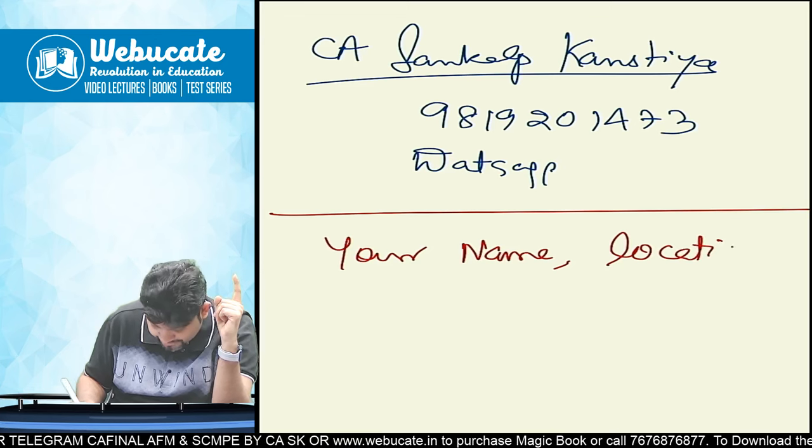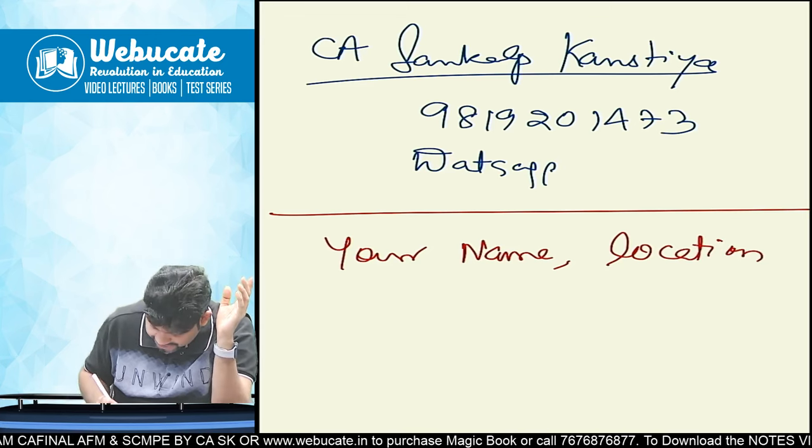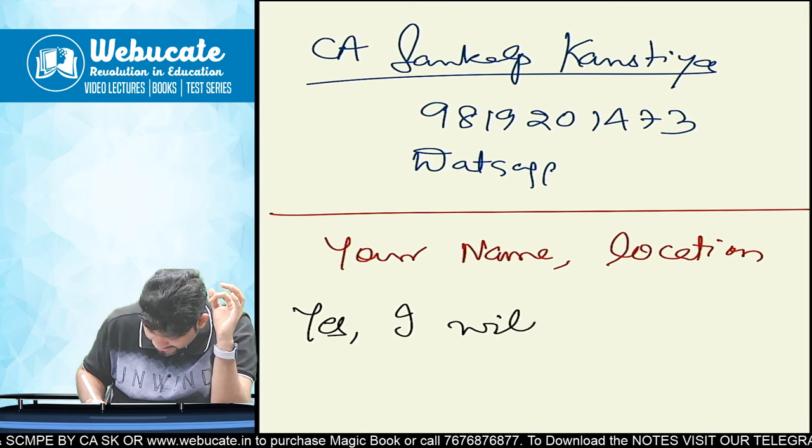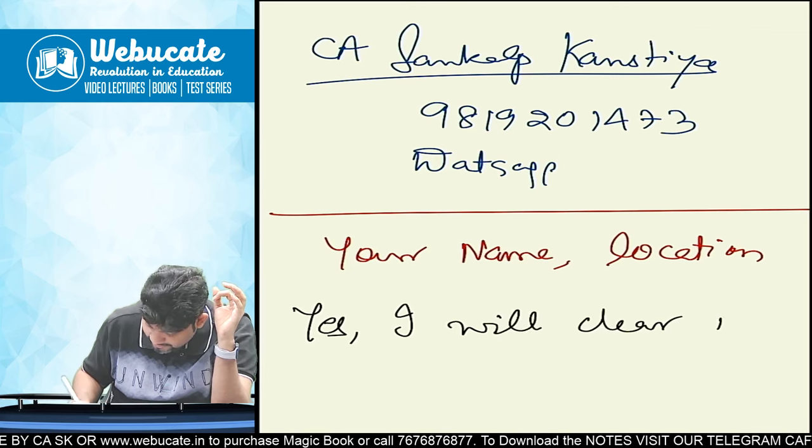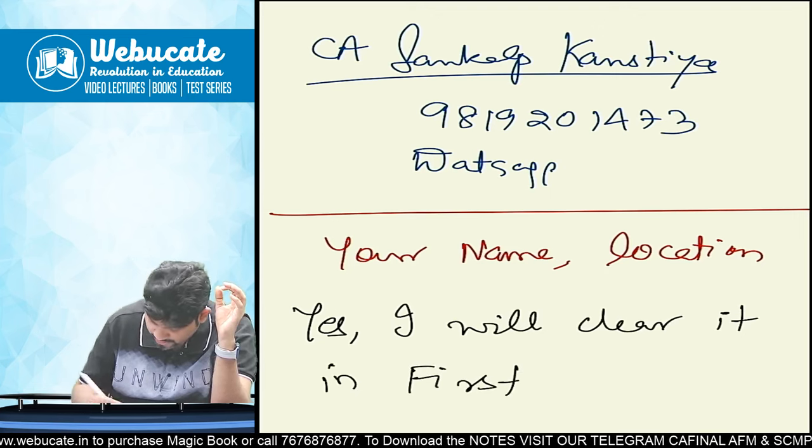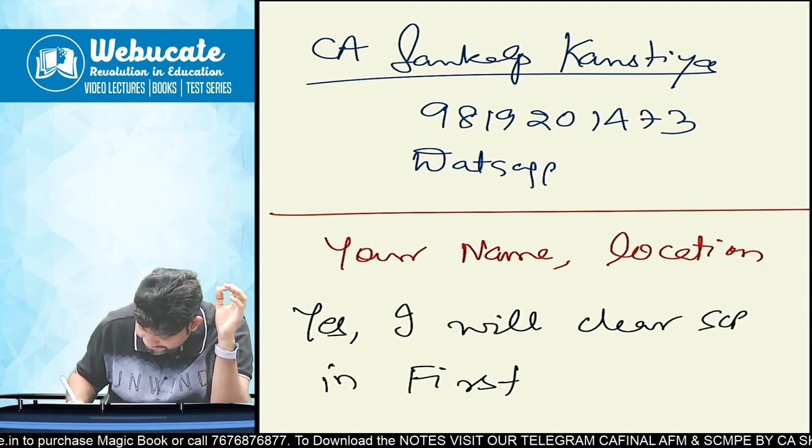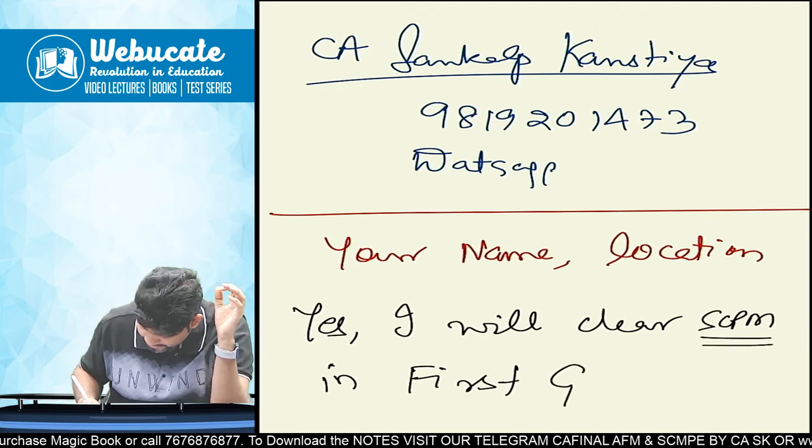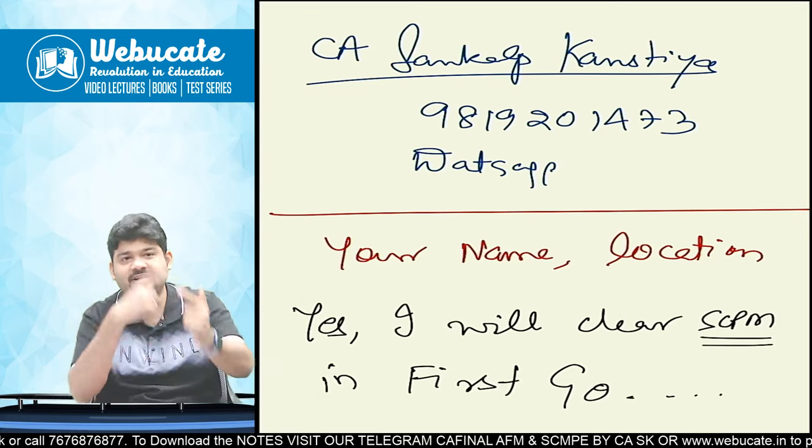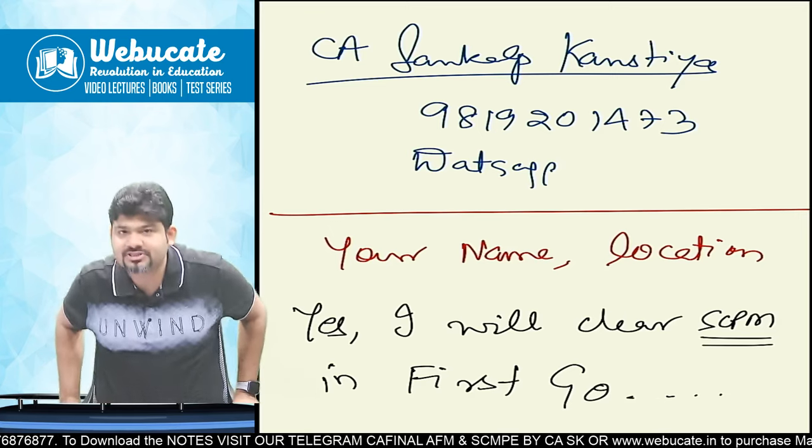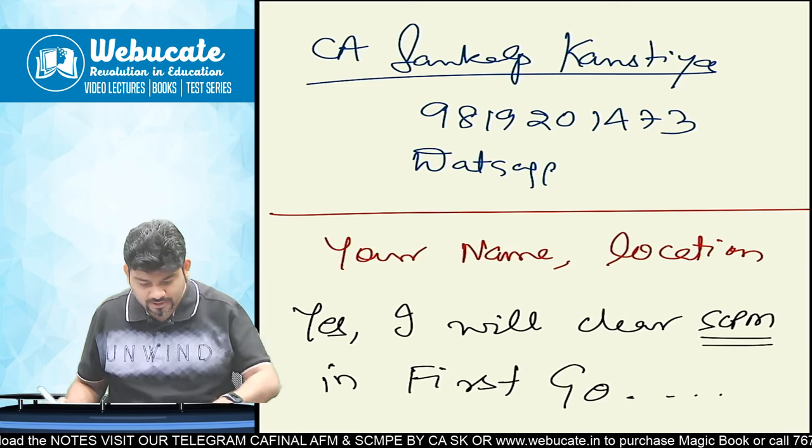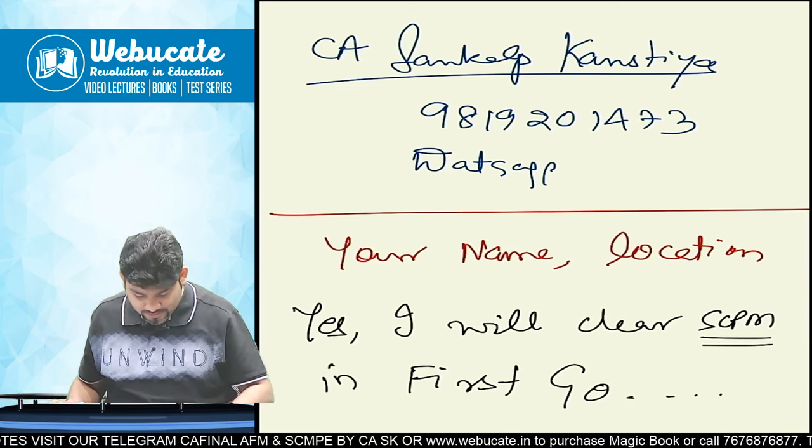Now what you have to send me is you have to send me your name. Just drop me a WhatsApp relating to your name, your location, and you have to send me this. Yes, I will clear it in first go. Clear what? Clear SCPM. In first go. This is what you have to do. Why? So that next time when you ask the doubt, we are already connected with each other and things will go in a much faster manner.